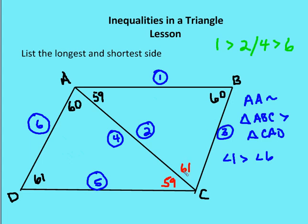Why can't BC be the smallest side? Triangle ABC is larger in area and size than triangle CAD, because side AB opposite 61 degrees in ABC is bigger than AC opposite 61 degrees in CAD. So even though the two triangles are similar, ABC is larger than CAD. Because ABC is larger, BC will be greater than AD even though both are opposite 59-degree angles in their respective triangles. Therefore, the longest side is AB and the shortest side is AD.